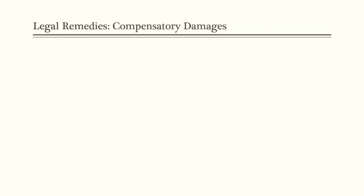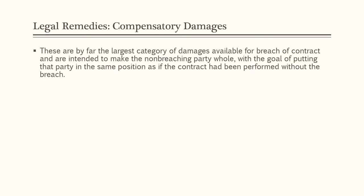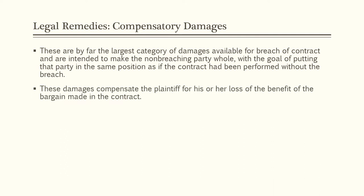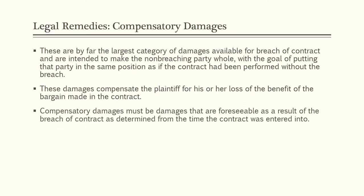First we'll examine compensatory damages. Compensatory damages are by far the largest category of damages available for breach of contract. They're intended to make the non-breaching party whole, with the goal of putting that party in the same position as if the contract had been performed without the breach. These damages must be foreseeable as a result of the breach, as determined from the time the contract was entered into — not from the time of the breach itself.